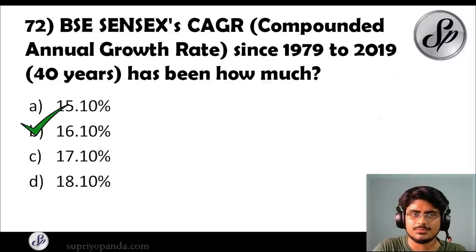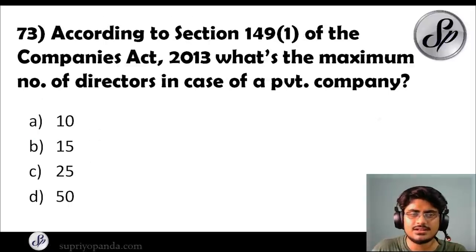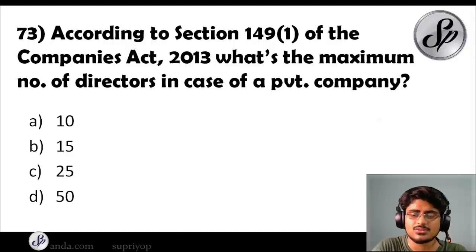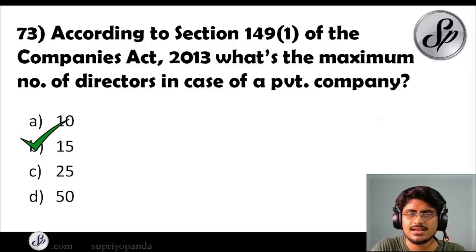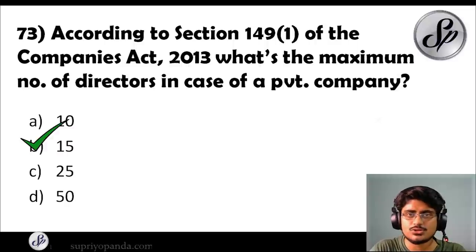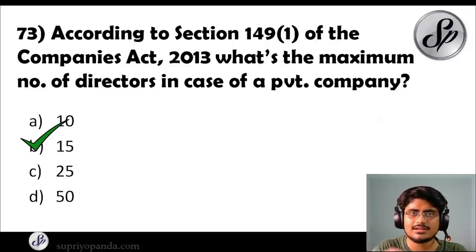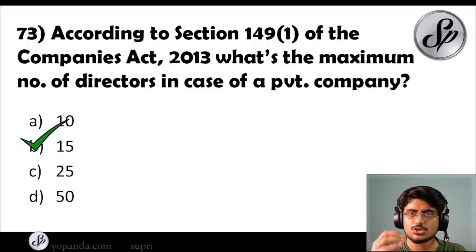Question seventy-three: according to Section 149.1 of the Companies Act 2013, what is the maximum number of directors in the case of a private company? The answer is 15 directors. Both maximum and minimum director count questions are often framed — make sure you note these things especially well.